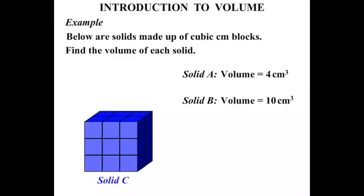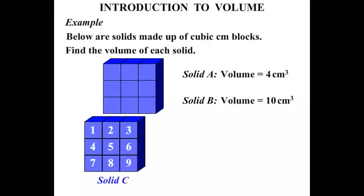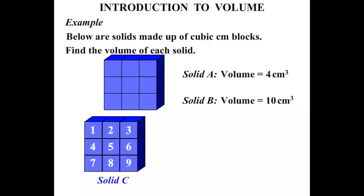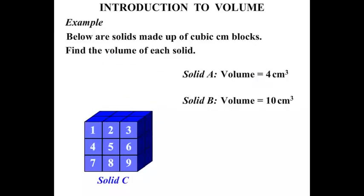Okay, Solid C. Let's count the front there. 1, 2, 3, 4, 5, 6, 7, 8, 9. Alright, so that has 9 cubic centimeter frontage. You notice that at the back too, that would also have 9 cubic centimeters. Alright, so in other words, what have we got? We've got 2 lots of 9, and 2 times 9 is 18. So Solid C has a volume equal to 18 cubic centimeters.